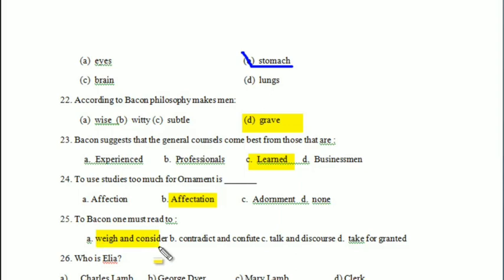Who is Elia? Charles Lamb, George Dyer, Mary Lamb, or Calag? Charles Lamb's pen name is Elia.